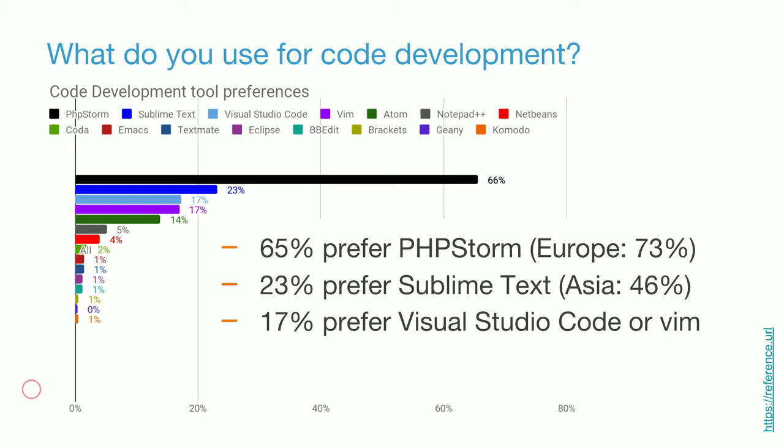Notepad and similar tools are the outliers, and those are predominantly from Europe, Oceania, and Asia — likely folks working in the terminal.